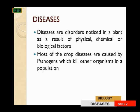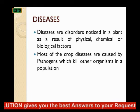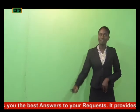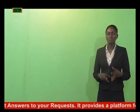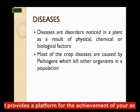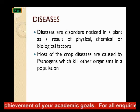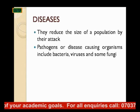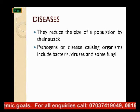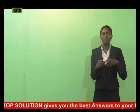Diseases are disorders noticed in a plant as a result of physical, chemical, or biological factors. Most crop diseases are caused by pathogens, which kill other organisms in a population. Diseases reduce the size of a population by their attack. Pathogens or disease-causing organisms include bacteria, fungi, and viruses.